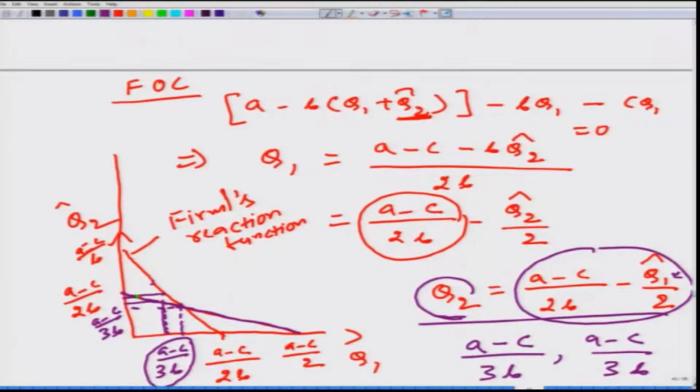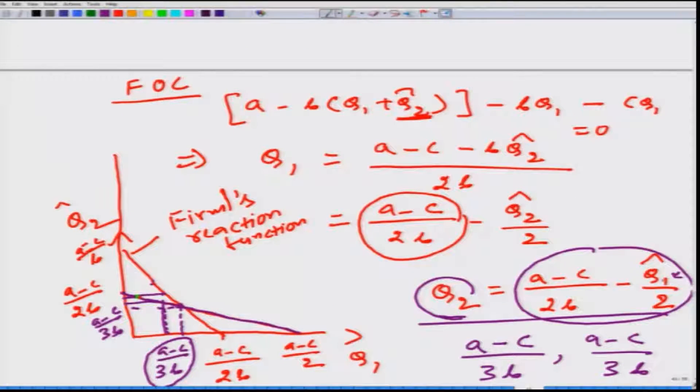The only difference here is that it is not firm two's belief anymore. Firm two knows for certain that firm one is going to produce Q1 amount because firm two has observed how much firm one has produced.